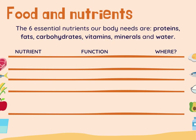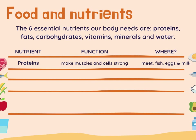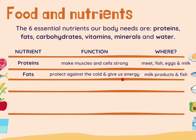Proteins make muscles and cells strong — that's their function. We can find proteins in meat, fish, eggs, and milk. Fats protect against the cold and also give us energy. We can find fats in milk products and fish. Carbohydrates give us energy, and we can find carbohydrates in bread, cereals, and pasta.